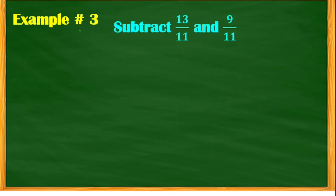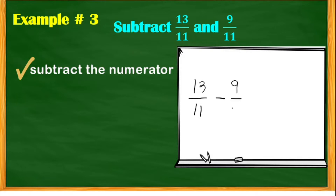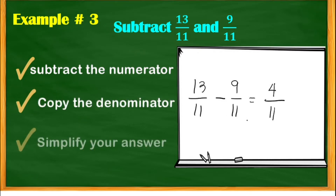Example number 3: this time, we're going to subtract 13/11 and 9/11. Write first the given: 13/11 minus 9/11. Since these are similar fractions, subtract the numerator: 13 minus 9, the answer is 4. Then copy the denominator, 11. The answer 4/11 is already expressed in simplest form, so this is our answer.